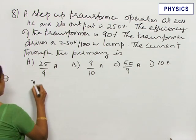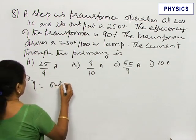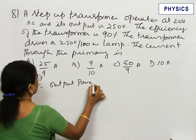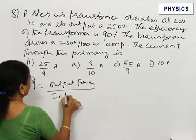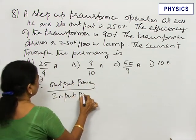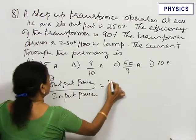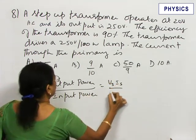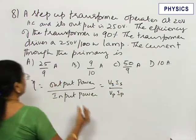Efficiency of a transformer equals output power divided by input power. In terms of voltage and current, it is Vs Is divided by Vp Ip.